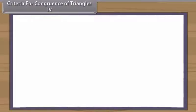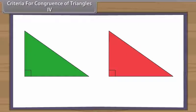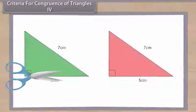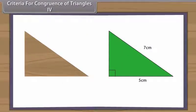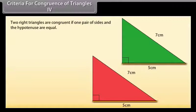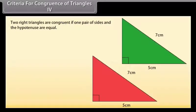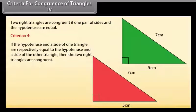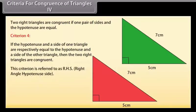Now construct two right-angled triangles with hypotenuse equal to 7 cm and one side equal to 5 cm each. Cut them out and place one triangle over the other with equal sides placed on each other. We will observe that the two triangles cover each other completely and so they are congruent. Two right triangles are congruent if one pair of sides and the hypotenuse are equal. Thus, Criterion 4: If the hypotenuse and a side of one triangle are respectively equal to the hypotenuse and a side of the other triangle, then the two right triangles are congruent. This criterion is referred to as RHS — right angle hypotenuse side.